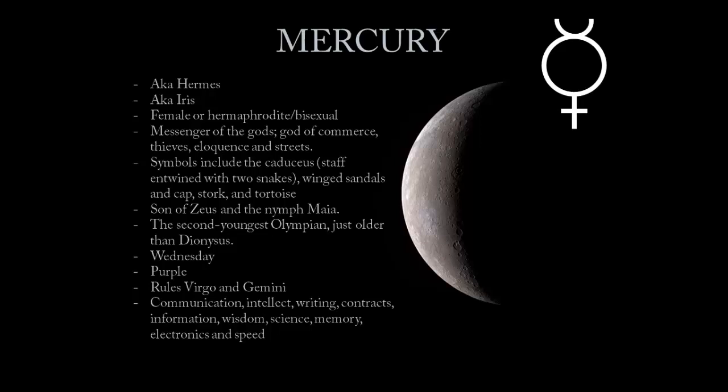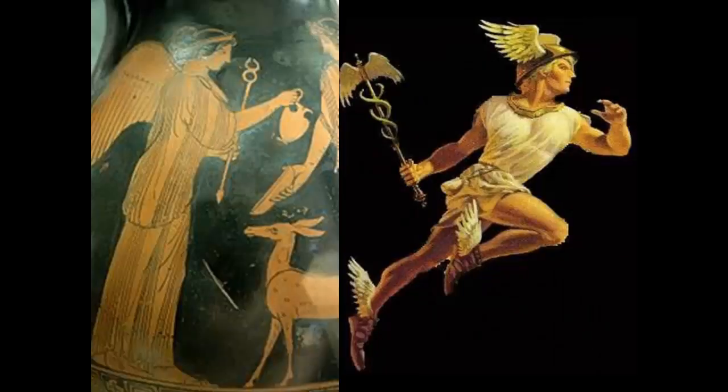Virgo is the virgin — the Virgin Mary. If you look at the symbol of Virgo, it looks like an M with a little Y, which is like 'Mary.' In other religions where they use the virgin, the names are very similar. Mercury is all about communication, intellect, writing, contracts, information, wisdom, science, memory, electronics, and speed. If you wanted to influence people through your speech, you would look to Mercury for that quality.